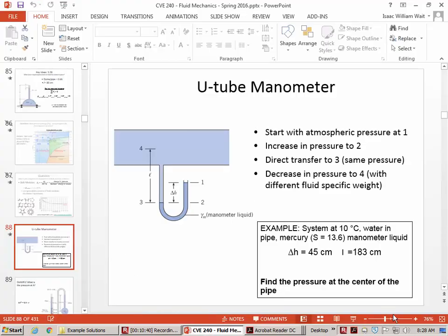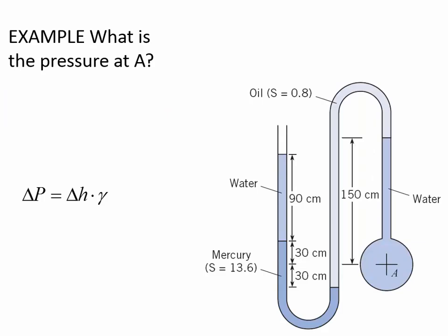Now here's a more complicated one to actually do the calculations on. We've got three fluids in this illustration. Where do we start in a problem like this? We want to find the pressure at A. Anytime you're working on a problem, you start with what you know and work towards what you don't know. You know the gauge pressure is zero where it's open to the air — right here at that interface. So this is where we begin; we'll work our way towards the unknown and calculate the pressure at A.